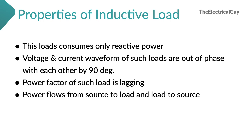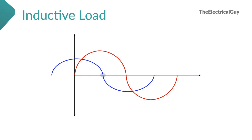This type of load is not as easy to handle as resistive loads — they create a lot of problems in the system, but of course they are equally important. Since current lags behind the voltage by 90 degrees in such loads, switching becomes difficult. As we know, a circuit breaker opens at the current zero condition — in inductive loads, when current is zero, voltage is at its maximum. And hence when the circuit breaker opens, the voltage across the breaker contacts is maximum, making switching a critical operation. Such loads also heavily affect the power factor of the system, and hence the electricity bill goes up.